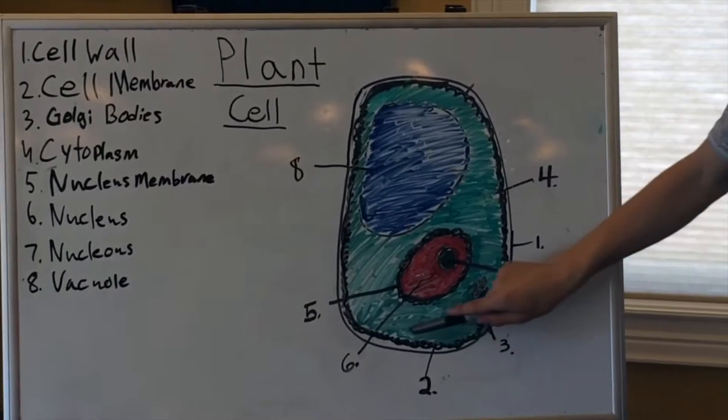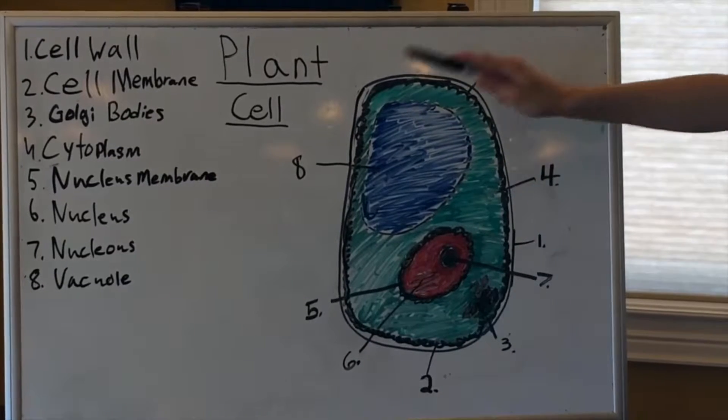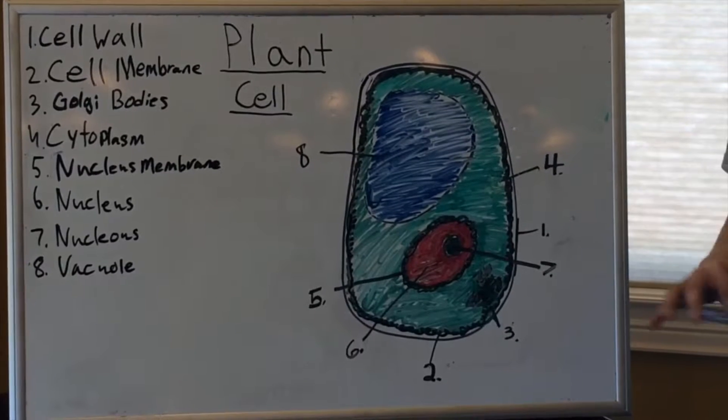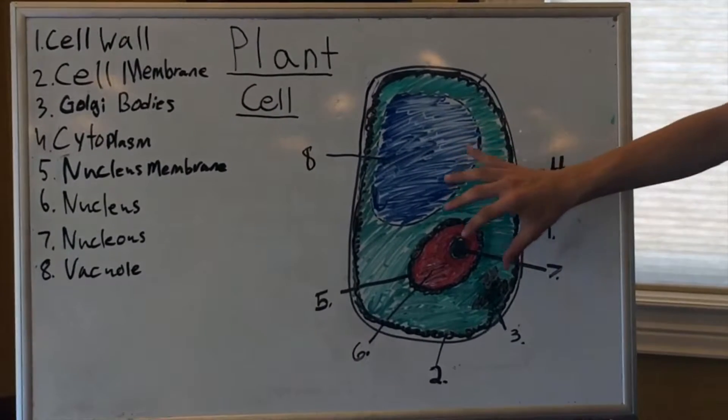The second part is this rough squiggly line along the cell, and it is called the cell membrane. The cell membrane is a rough membrane that contains all the other parts of the cell.